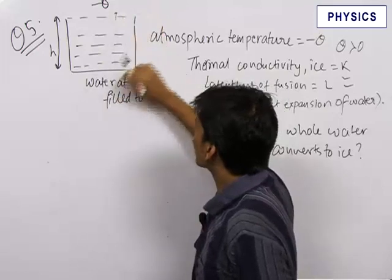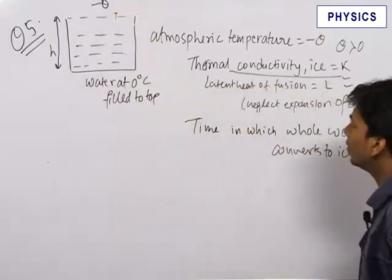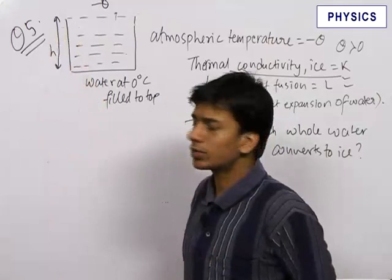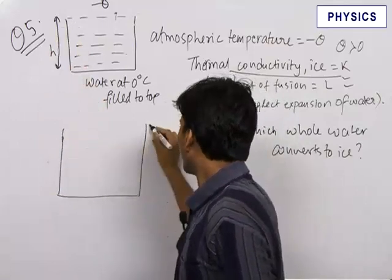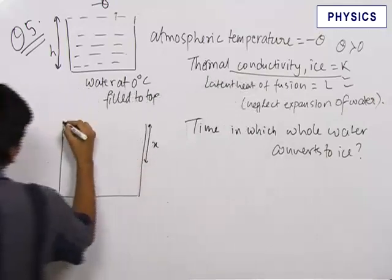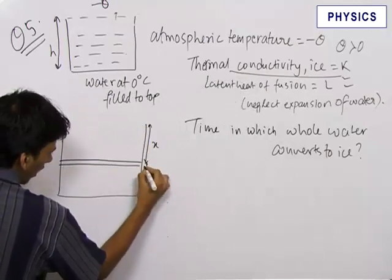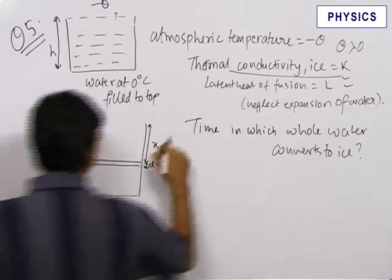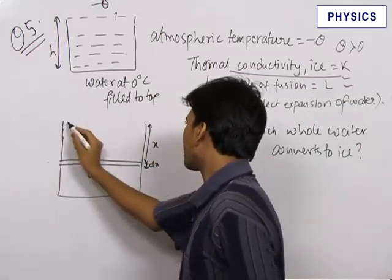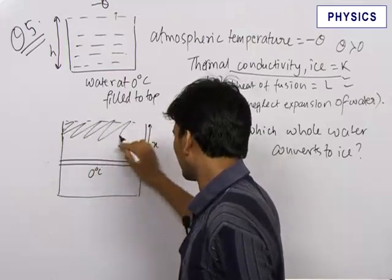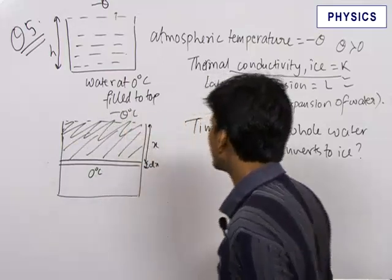As the layer of ice grows, there will be a temperature difference across the two ends of the ice layer, and the thermal conductivity of ice is involved — therefore we have to integrate to get the solution. Let us assume that ice has already developed to a depth of x, and let us consider the formation of another thin layer of ice of thickness dx at this depth x. The water below is at 0°C, the ice above extends to the top, and the atmospheric temperature at the top is minus theta.